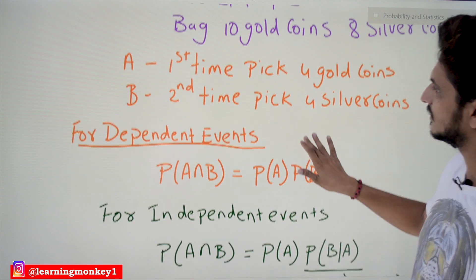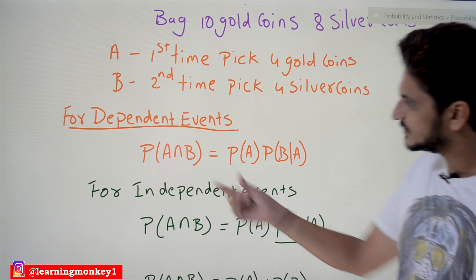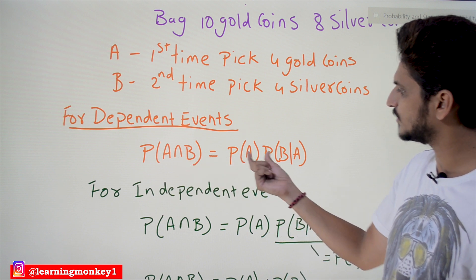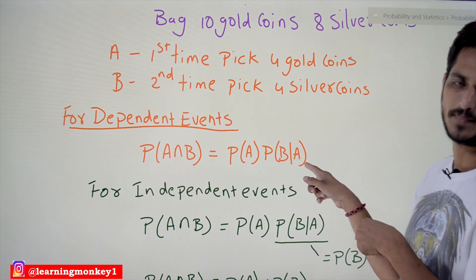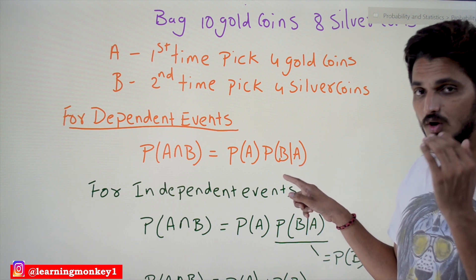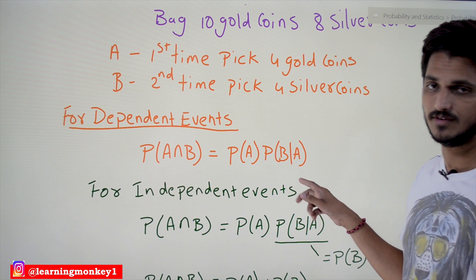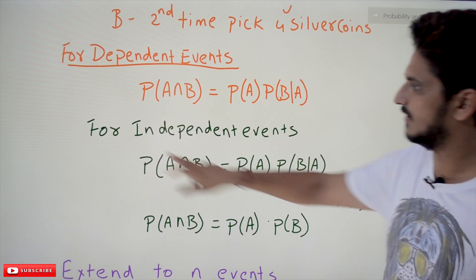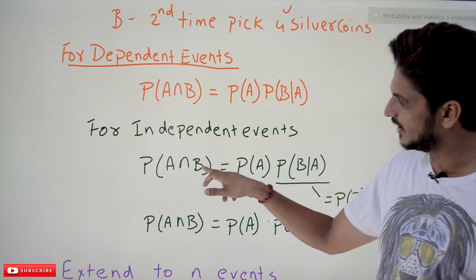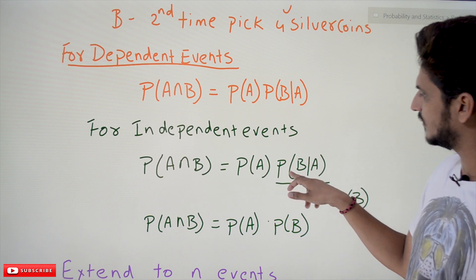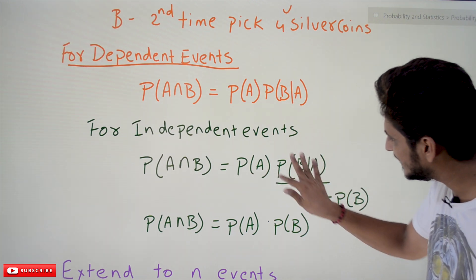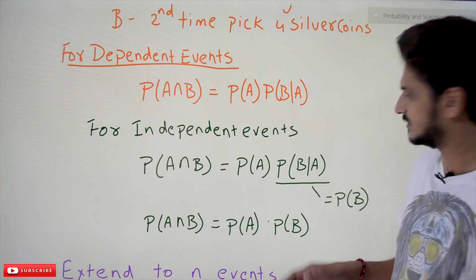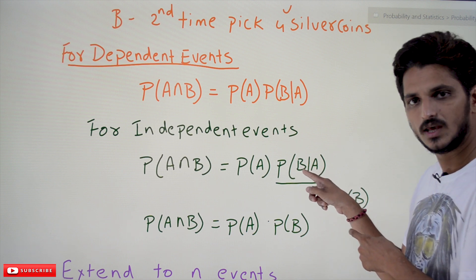One more important point: this multiplication rule applies to dependent events. For dependent events, P(A∩B) = P(A) · P(B|A), where conditional probability applies. For independent events, however, P(A∩B) = P(A) · P(B|A), but here P(B|A) equals simply P(B) — which is what we discussed when we covered independent events: the probability of B given A has happened is just P(B).